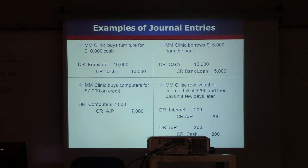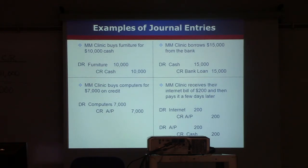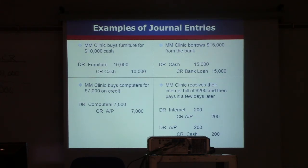Both furniture and cash are assets, so one has gone up and the other has gone down — the equation is still in balance. Another example: MM Clinic borrows $15,000 from the bank — debit cash $15,000, which is an asset going up; credit bank loan, which is a liability going up. Assets equals liabilities and equities are still in balance. Third entry: MM Clinic buys computers for $7,000 on credit — debit computers $7,000, asset goes up; credit accounts payable $7,000, liabilities go up. Debits still equal credits and assets equal liabilities and equities.